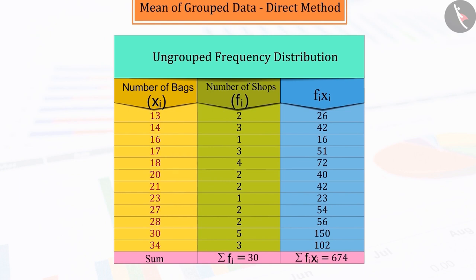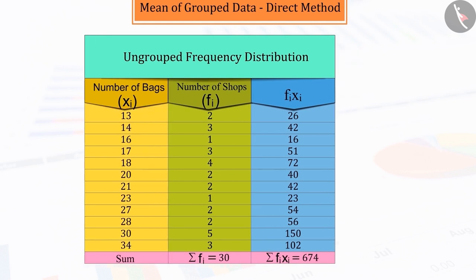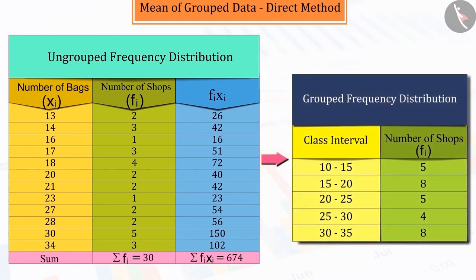From the above data, we can tell that we have a minimum of 13 bags and a maximum of 34 bags. Therefore, by making the width of grouped data as a class interval of 5, convert them into grouped data, where the first interval is 10 to 15, the second interval is 15 to 20, and thus the last interval will be 30 to 35.